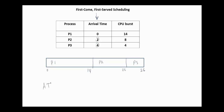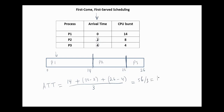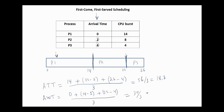To compute the average turnaround time: Process 1 takes 14 milliseconds, Process 2 finishes at 22 minus arrival time 2, and Process 3 finishes at 26 minus arrival time 4, giving 56 over 3, which is about 18.7. The average waiting time: Process 1 does not wait, Process 2 waits 14 minus 2, and Process 3 waits 22 minus arrival time 4, giving 30 over 3, which equals 10. So the average waiting time in this case equals 10.